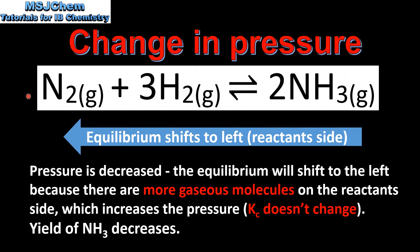Let's have a look at one more example of a change in pressure. If pressure is decreased, the equilibrium will shift to the left because there are more gaseous molecules on the reactant side, which increases the pressure of the system. Once again the value of Kc does not change, and the yield of ammonia decreases.